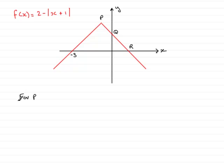what do we know about p? Well, p is the highest point on the graph. So we want to get f of x to be as large as possible. And for f of x to be as large as possible, we need this term to be as small as possible. The smallest value you can have for this mod is 0. And that's going to be when x plus 1 equals 0, in other words, when x is negative 1.